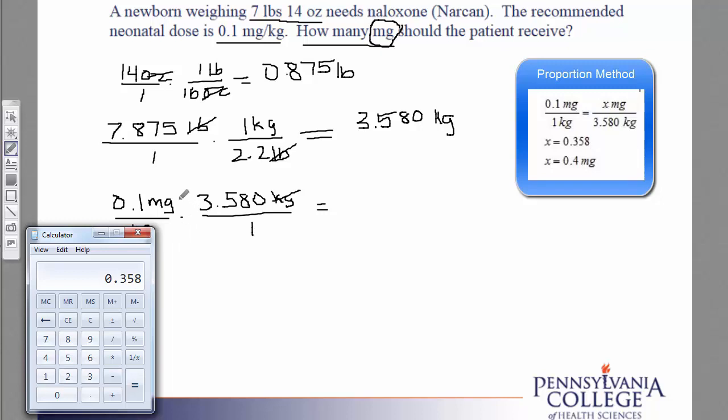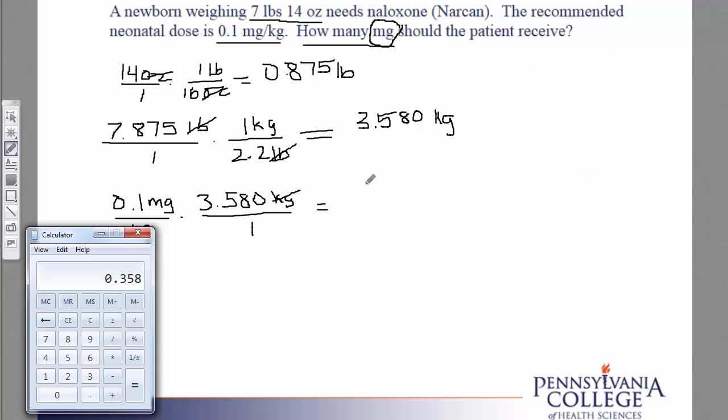When we're working with milligrams, we'll round to the nearest tenth, because that is the nearest measurable dose. So I'm looking to round to one decimal place, the five rounds that up, and I give an answer of 0.4 milligrams as the recommended dose for this patient.